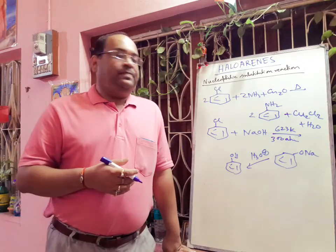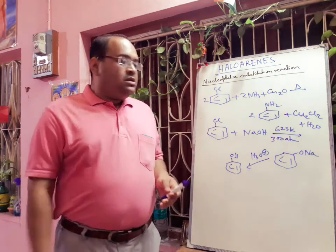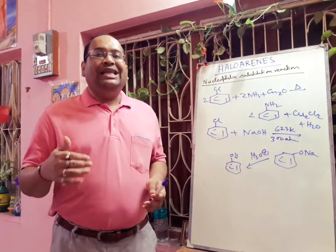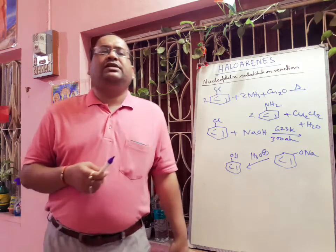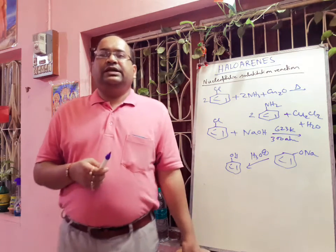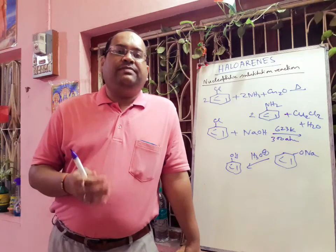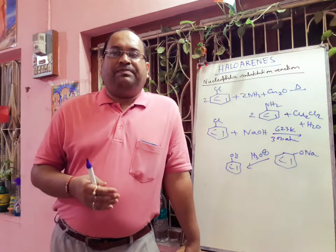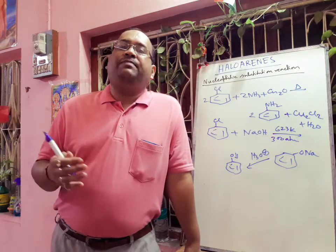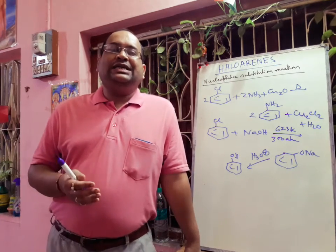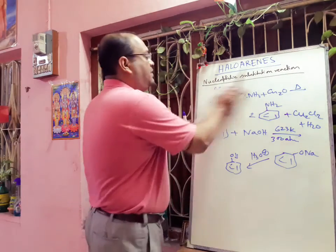Now, if we add some electron-withdrawing groups at the ortho and para positions of chlorobenzene, the substitution reaction will become easier. The presence of an electron-withdrawing group at the ortho and para positions increases the reactivity of haloarenes.